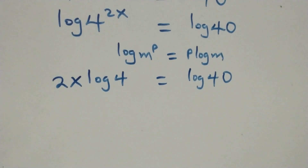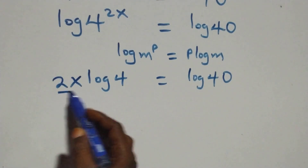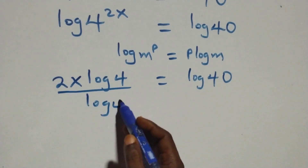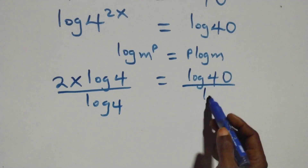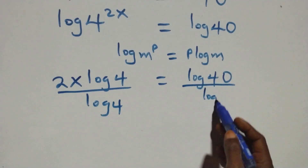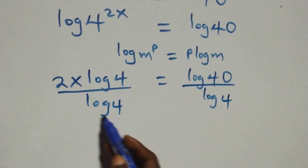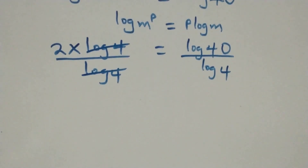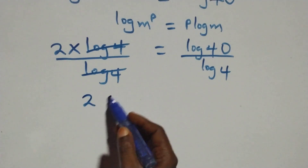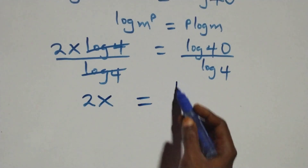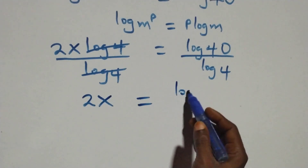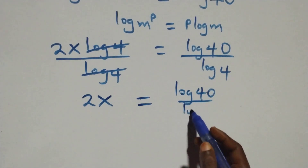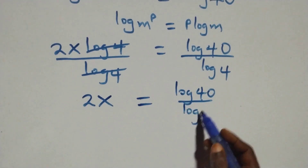Then here, we divide both sides by log 4. At this here, we have log 4 cancelled on each side. This becomes 2x equals log 40 over log 4.